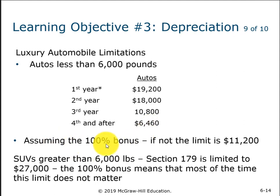If you don't take the 100% bonus for whatever reason, you only have $11,200 in the first year. For SUVs greater than 6,000 pounds but under 13,000 pounds, Section 179 is limited to $27,000, but the 100% bonus depreciation makes that irrelevant because you can still take 100% bonus on those large SUVs. When the 100% bonus starts phasing out in a couple of years, this will become a bigger issue, but for 2022, any SUV with a gross vehicle weight over 6,000 pounds can be fully depreciated via bonus depreciation in year one.